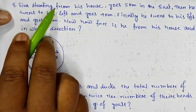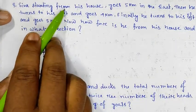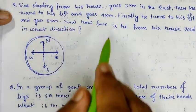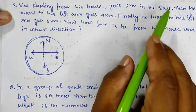Shiva starting from his house goes 5 km in the east, so this is 5 km in the direction of east from his house.